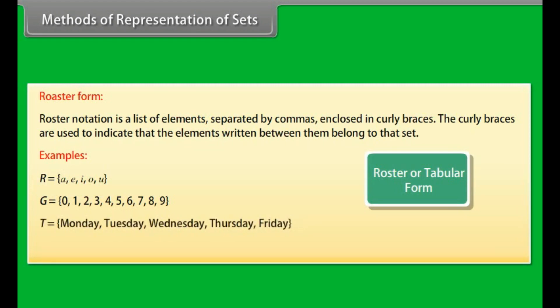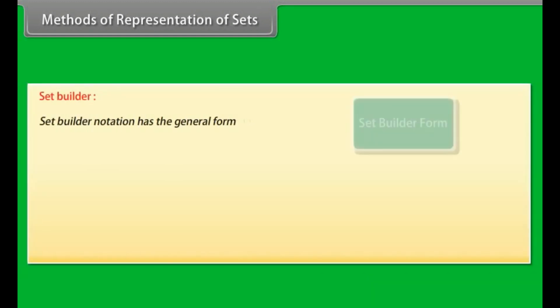T equals {Monday, Tuesday, Wednesday, Thursday, Friday}. Set builder notation has the general form given below.